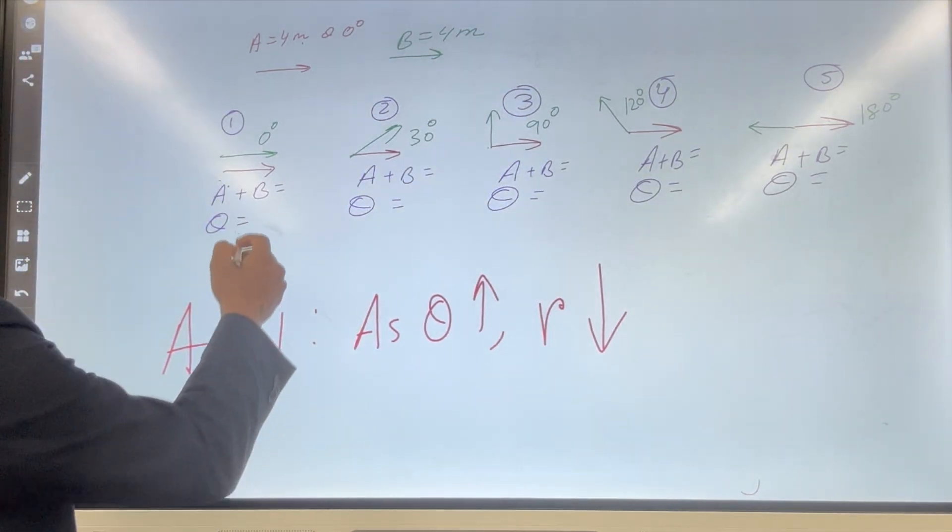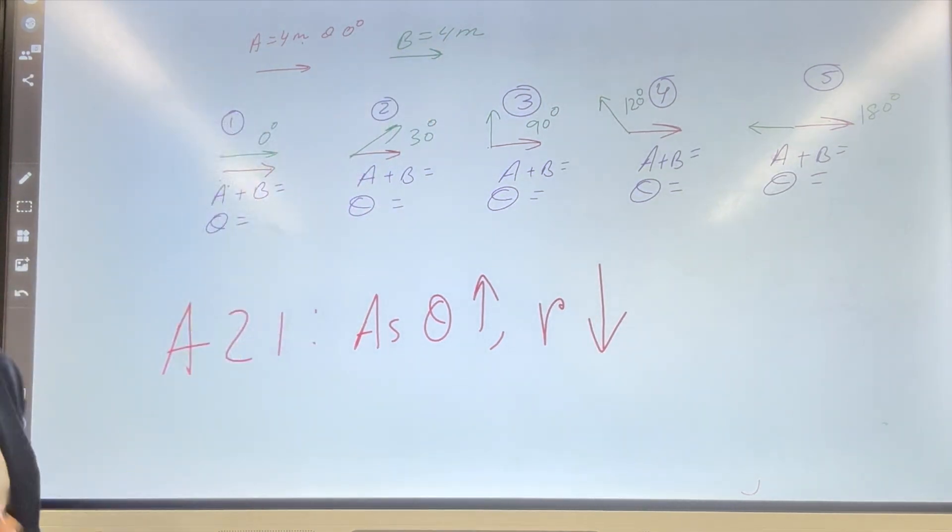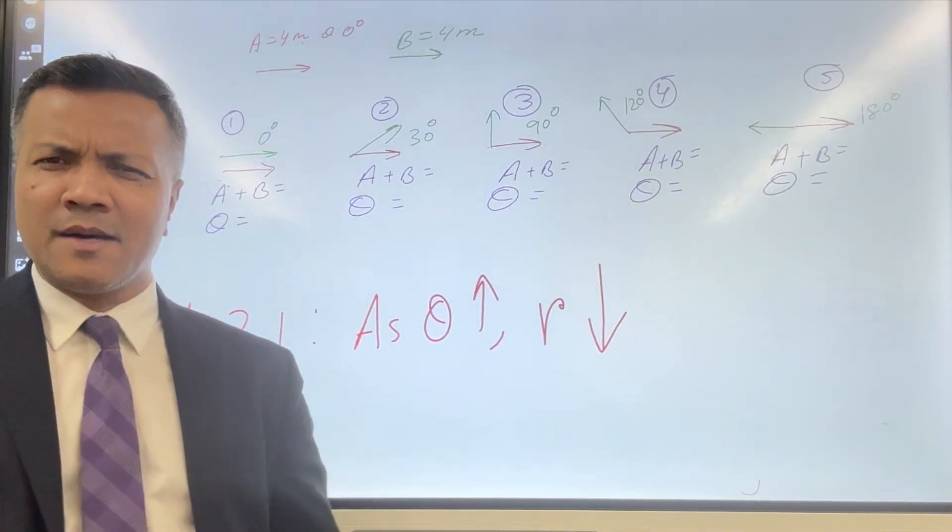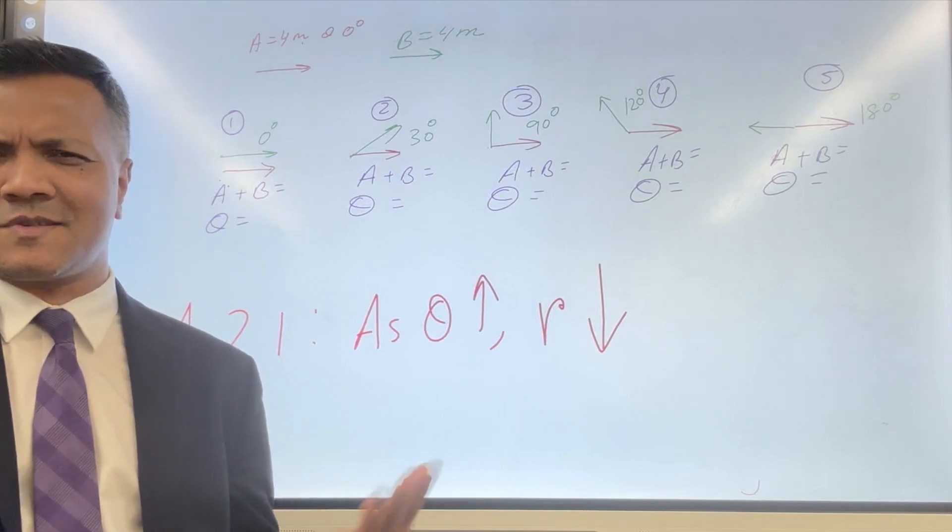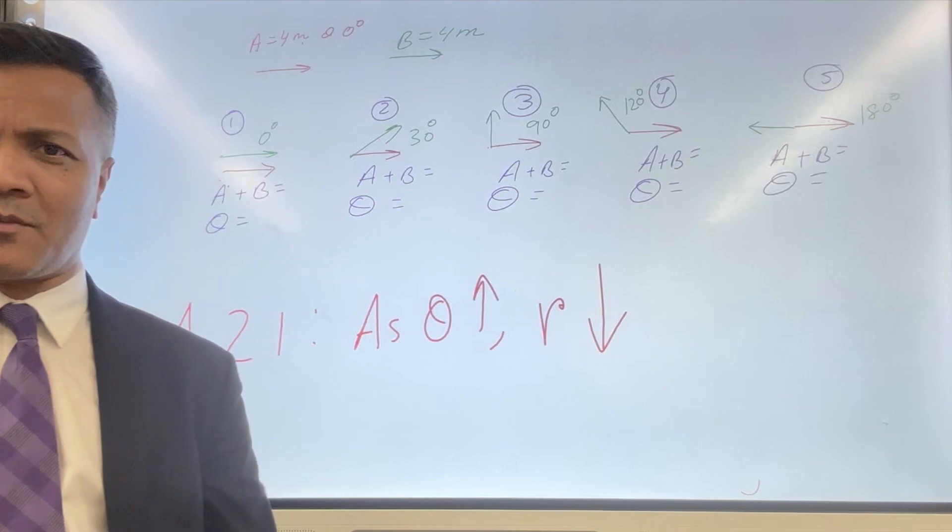So let's say vector A is 4 meter, vector B is 4 meter. Vector A, we're going to keep it constant at 0 degree. Vector B, you're going to change it: 0 degree, 30 degree, 90 degree, 120 degree, and 180 degree.